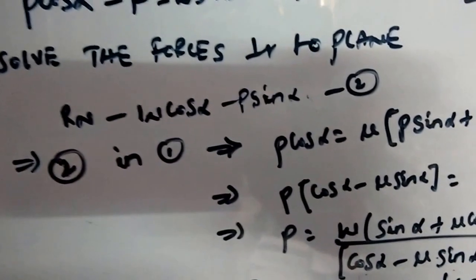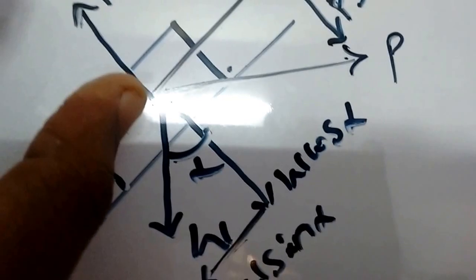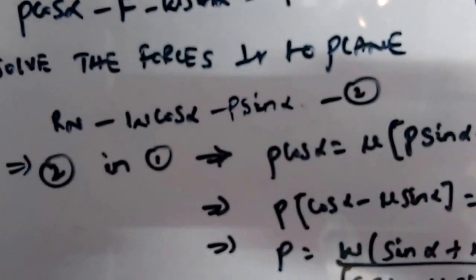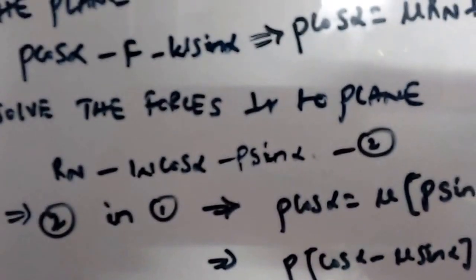Likewise, resolving forces perpendicular to the inclined plane from the free body diagram gives: RN minus W cos(alpha) minus P sin(alpha) equals zero, so RN equals W cos(alpha) plus P sin(alpha). Now substitute this RN value into the first equation.